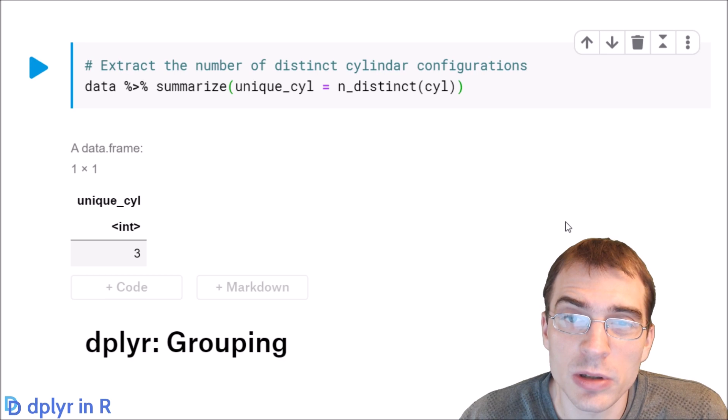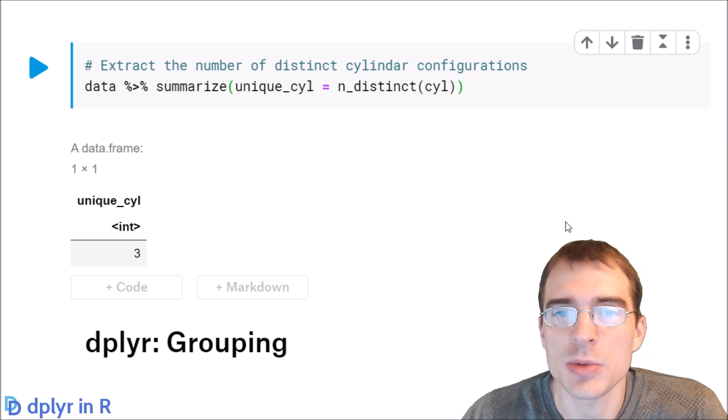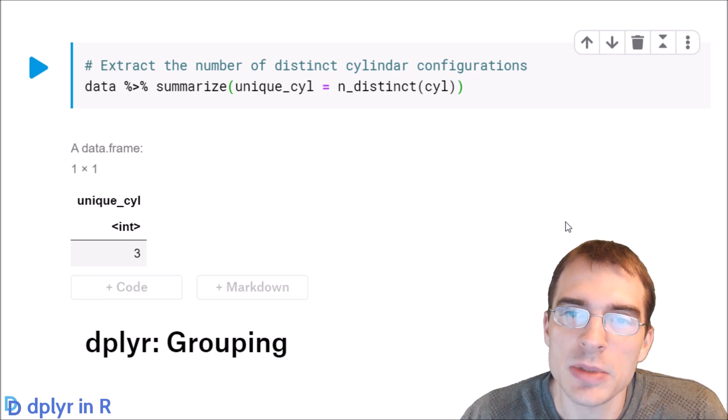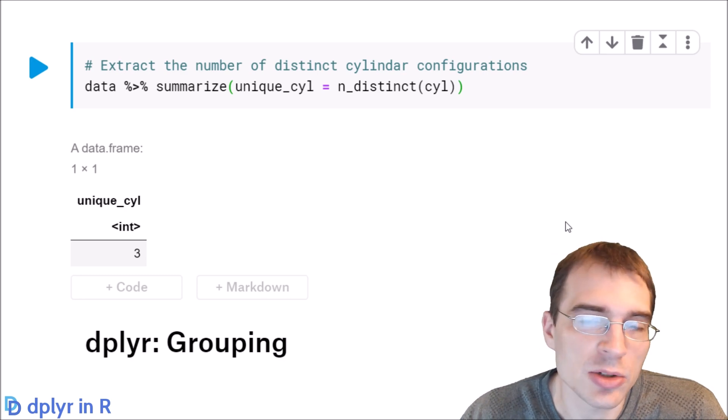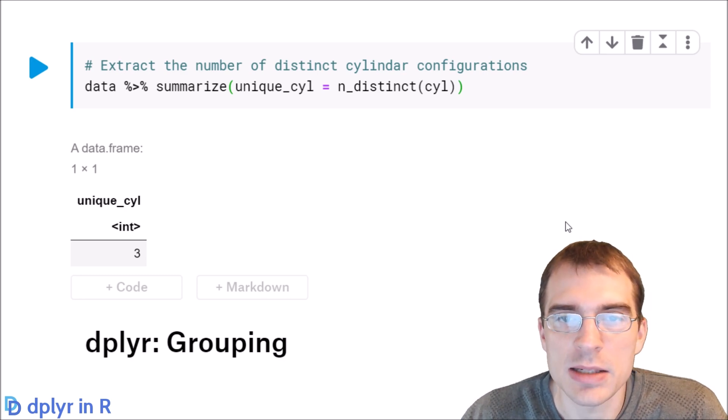In this lesson, we learned how to summarize entire columns all at once, but sometimes it's useful to generate summary statistics and do other operations on subgroups within a data set. So in the next lesson, we'll learn how to do grouping in dplyr and how to generate summary statistics along some categorical variable that you want to group the data by. So see you in the next lesson.